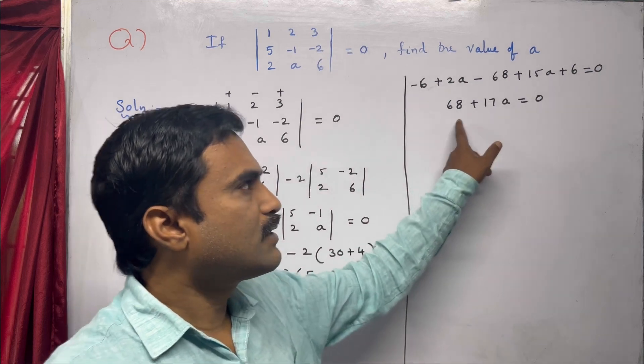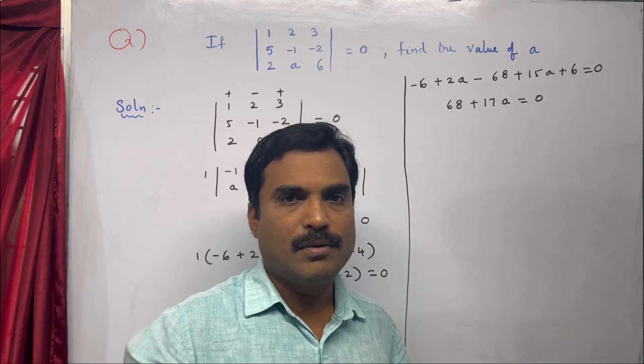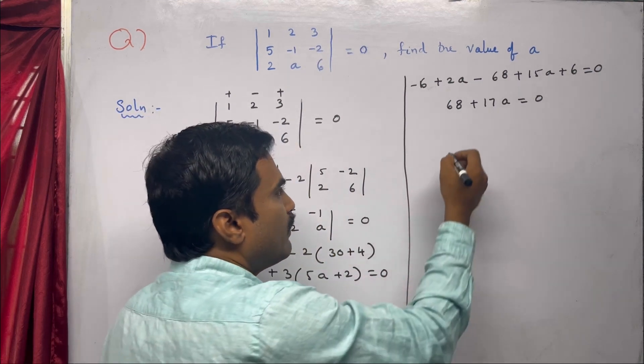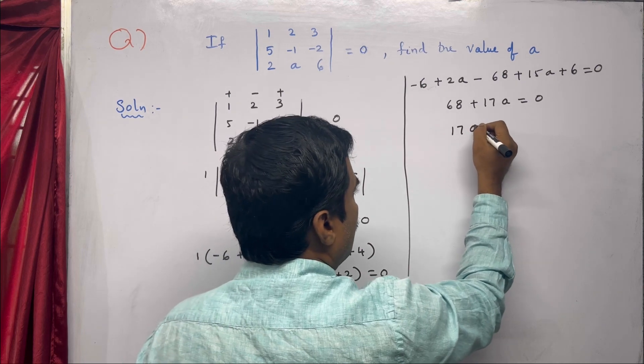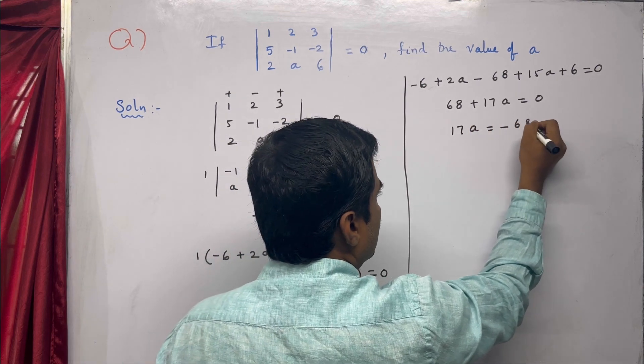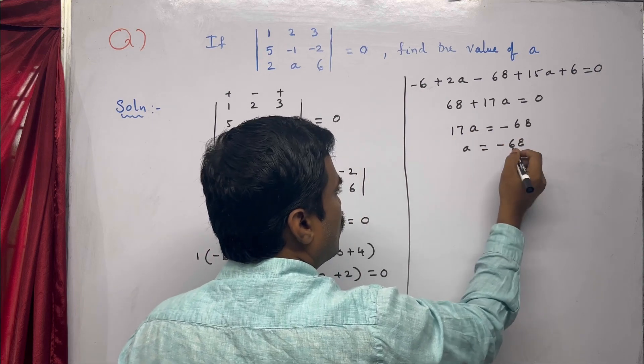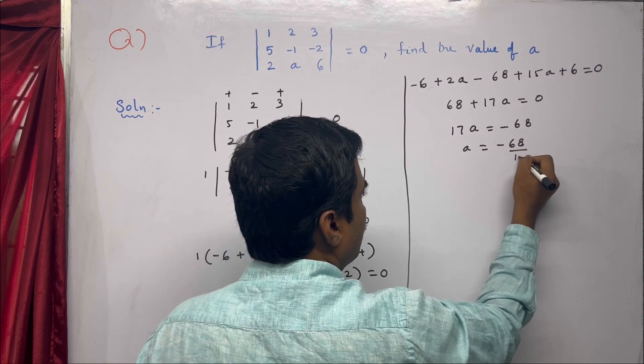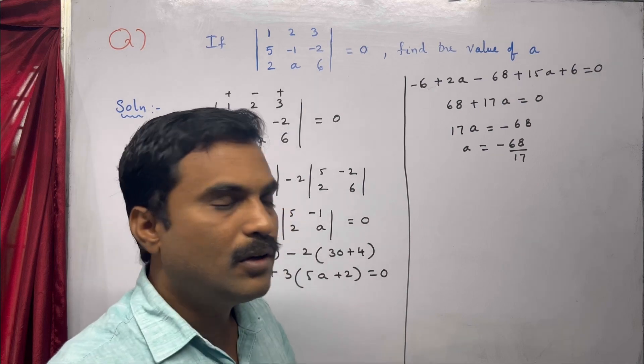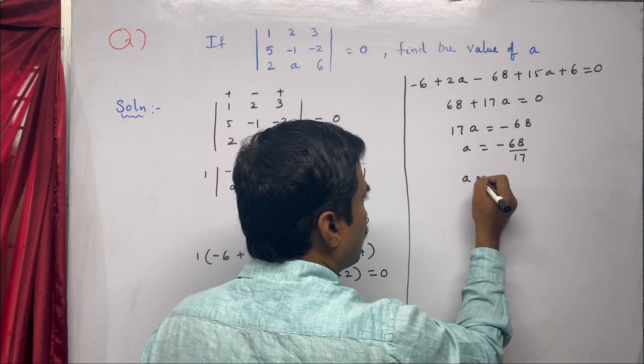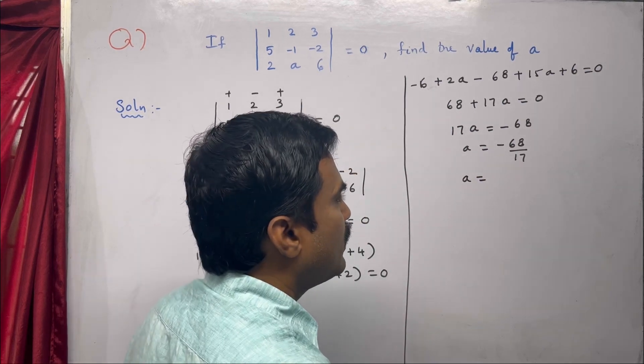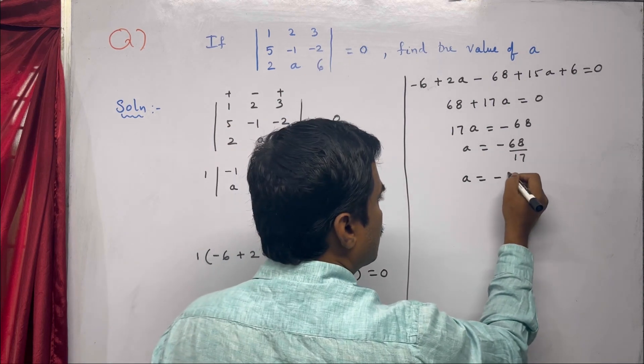Next, take 68 to the right-hand side, which becomes -68. So 17a = -68. Dividing by 17, we get a = -4.